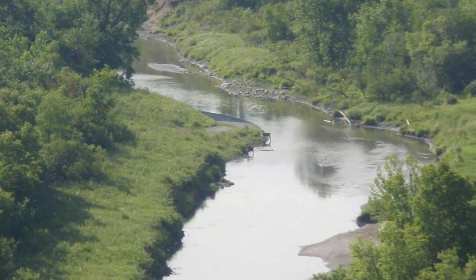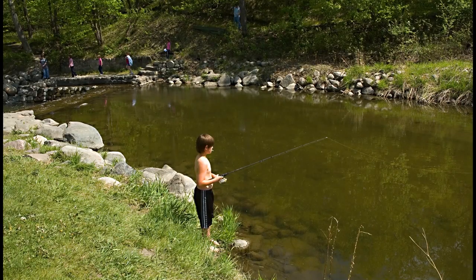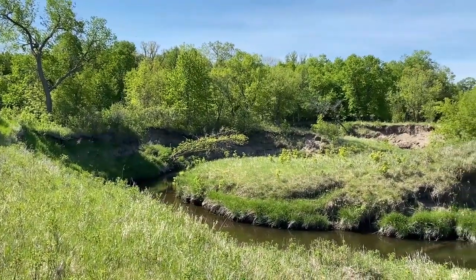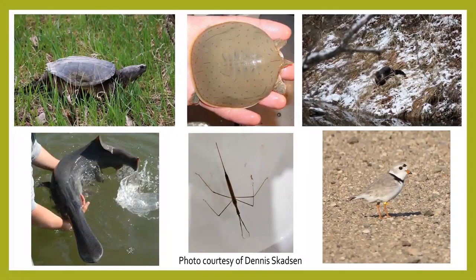North Dakota's rivers, lakes, and streams are home to almost 100 species of fish. Rivers, streams, and riparian habitats are home to many species of fish, turtles, frogs, toads, mud puppies, freshwater mussels, aquatic insects, river otters, beaver, mink, and shorebirds.